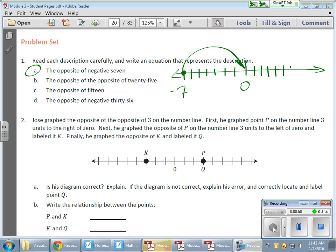So 2, 3, 4, 5, 6, 7 would be over here. So the opposite of a negative 7 would then be a positive 7.